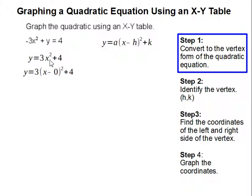Then I'm going to change the x squared to be x minus 0, so our equation mirrors the vertex form of the quadratic equation here.